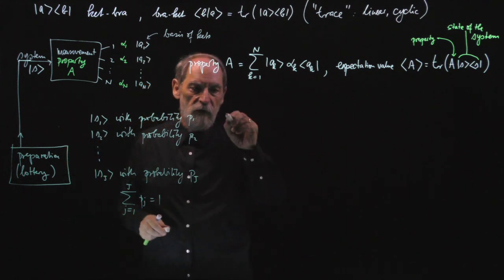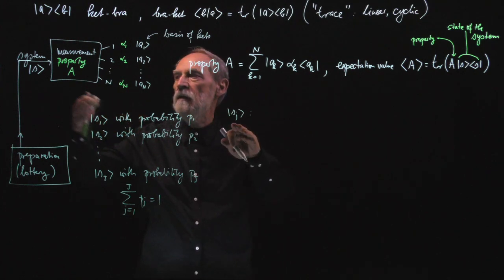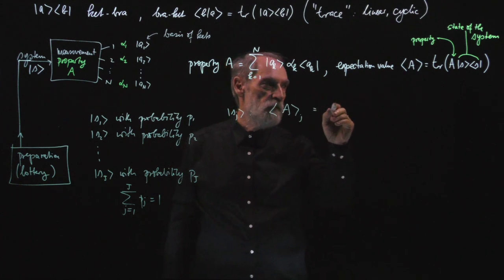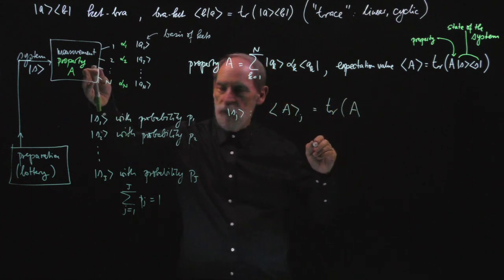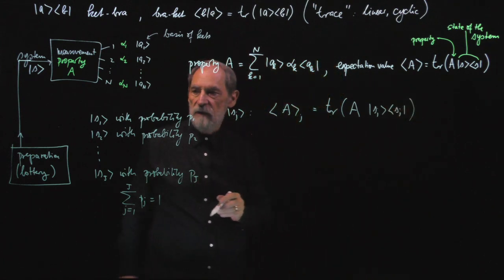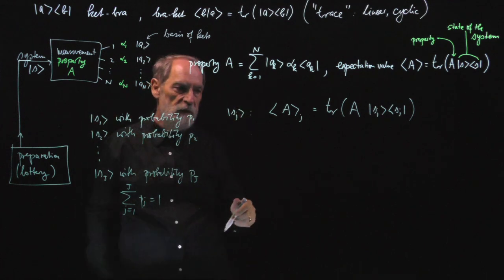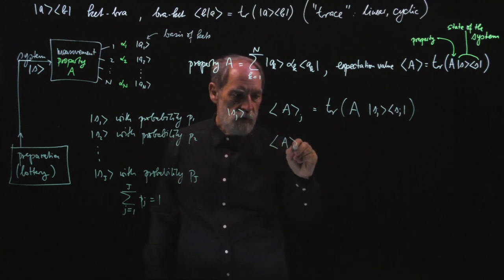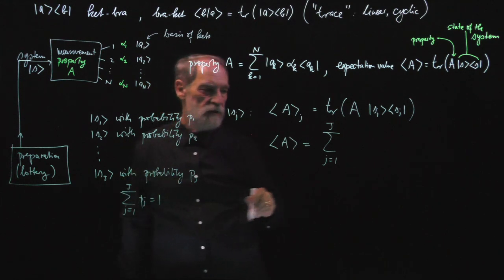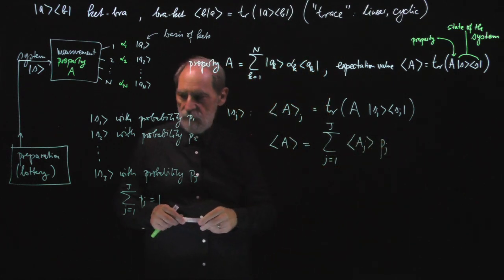This is no longer fully described by a single state, because we must take the lottery into account. If the arriving state is Sj, everything is as before: we get an expectation value for that particular system state, given by the trace of property operator A and the ket-bra for the jth state. But the overall expectation value of A must sum over all j, weighting the jth expectation value by its probability Pj.